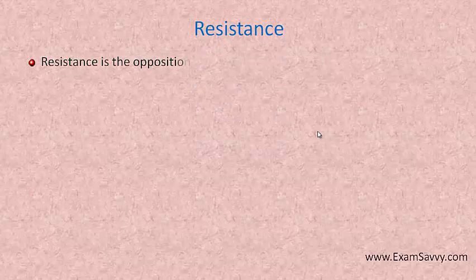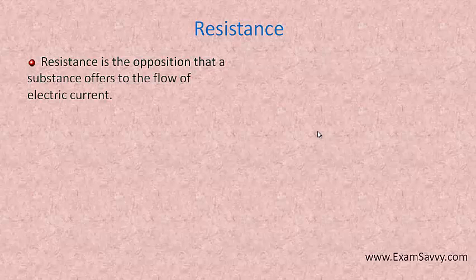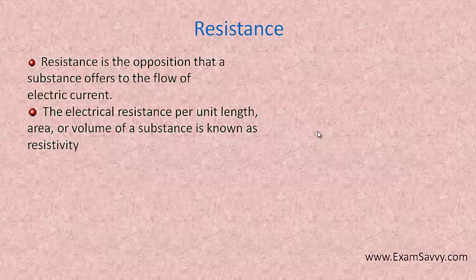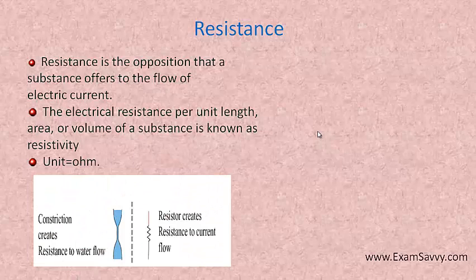Resistance is used to oppose the flow of current. It is the opposition — the substance which offers resistance to the flow of current. We also have resistivity, which is the electrical resistance per unit length or cross-sectional area or volume of a substance. Resistance is represented in terms of ohms. Here I have taken an example of water flow to show how resistance opposes the flow of current.